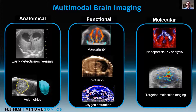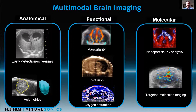I'm going to be talking mainly about three general areas: anatomical, functional, and molecular. Those are the kinds of data you're able to gather with ultrasound and photoacoustics — doing things like looking at morphology, screening or early detection, volumetrics, vascularity, perfusion, oxygen saturation, and then molecular imaging where we're using exogenous contrast agents to see different things.